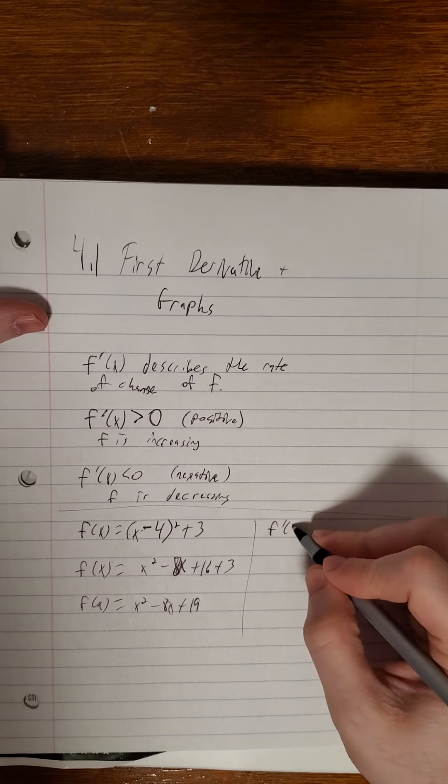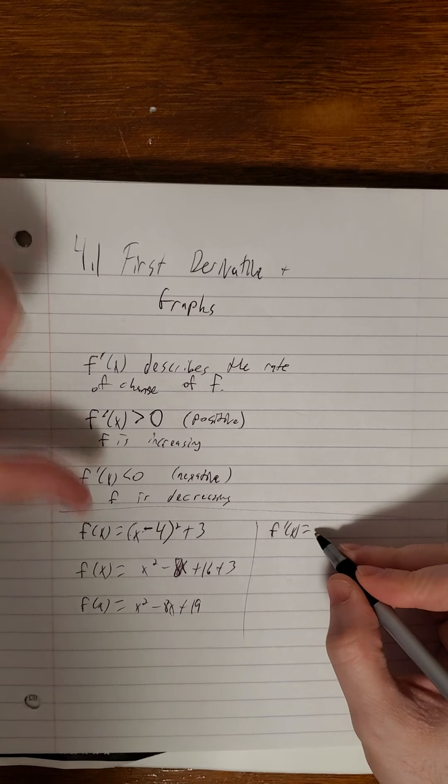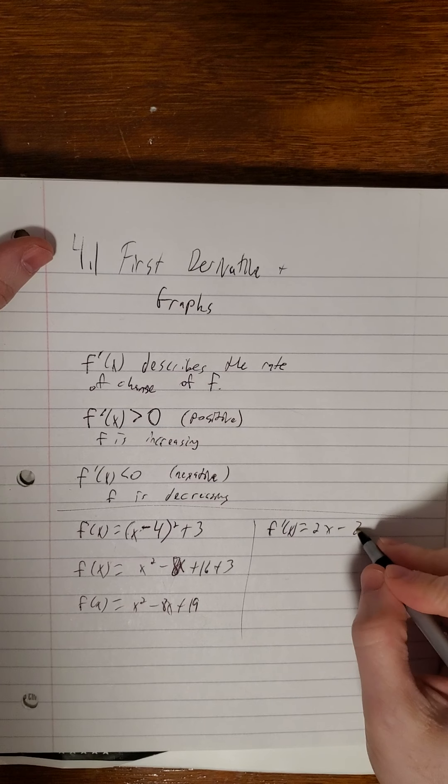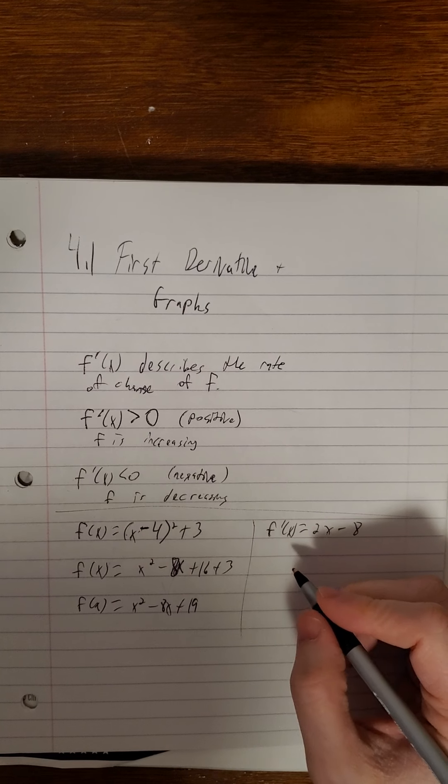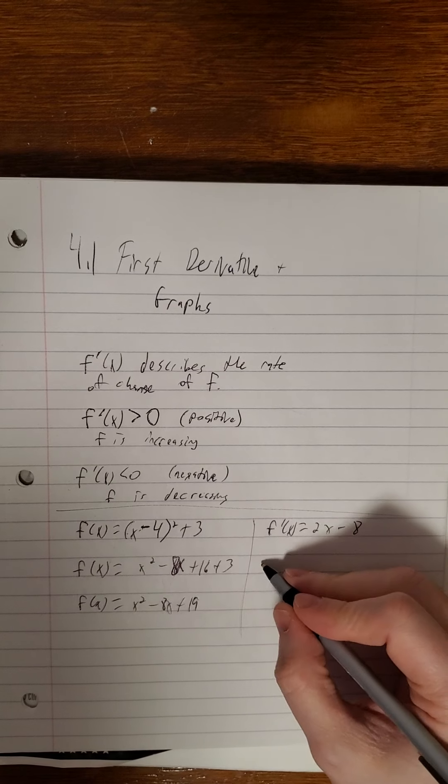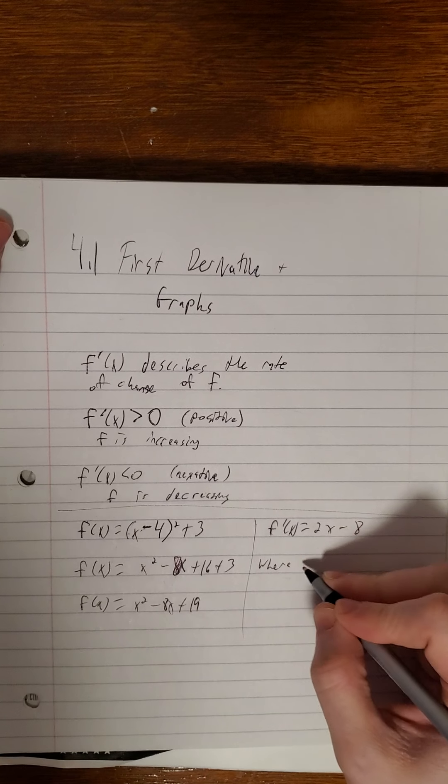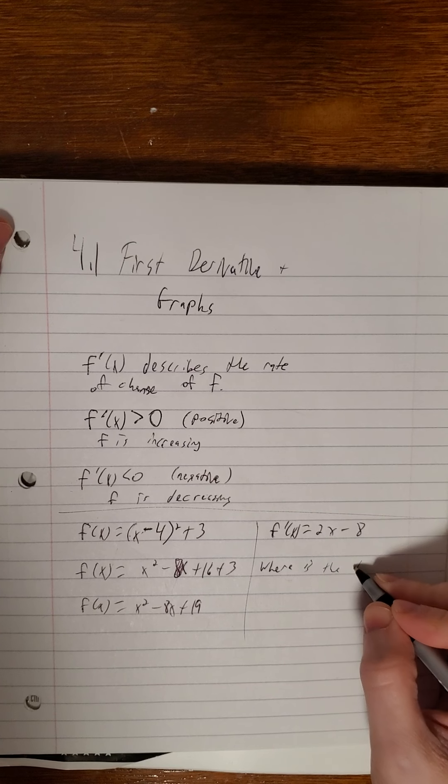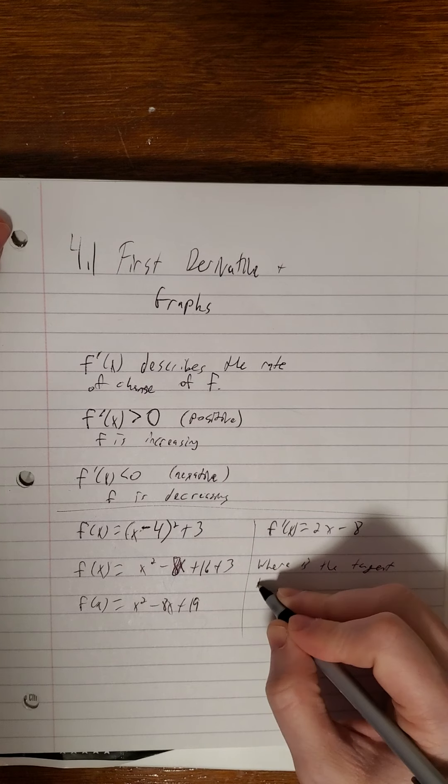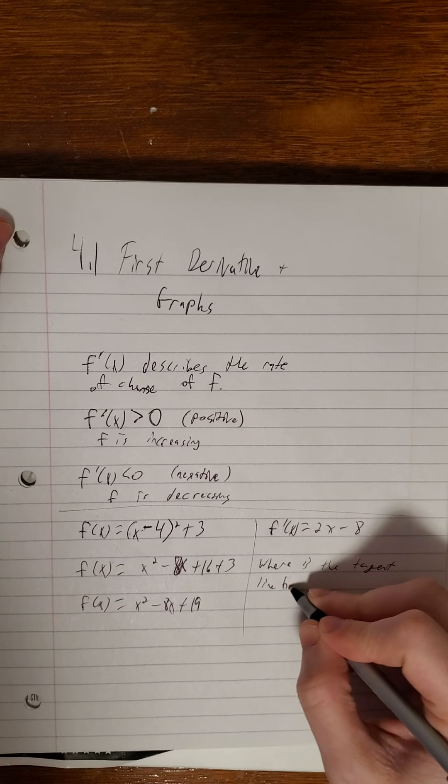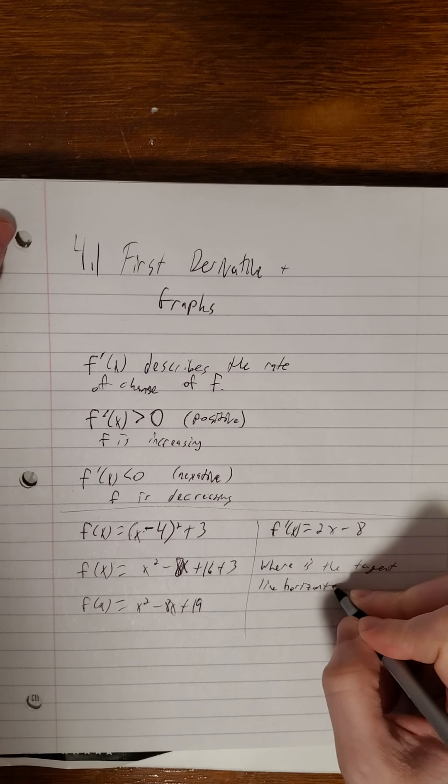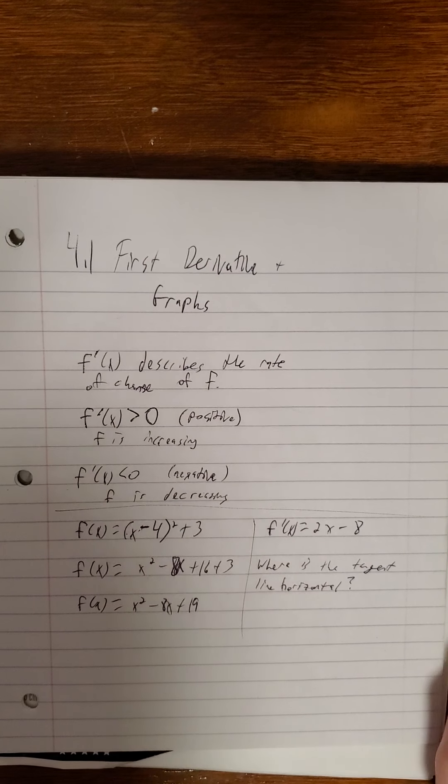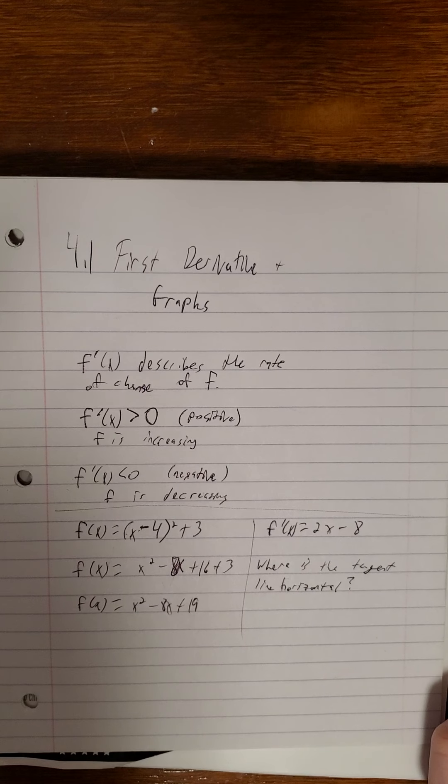So f prime of x would be 2x from the first term and the minus 8. If you can answer this question, pause it if you need to.